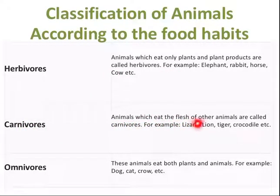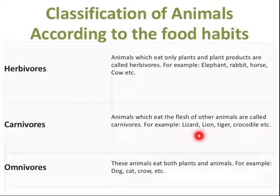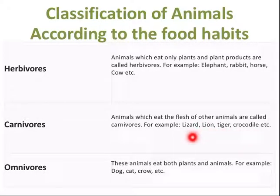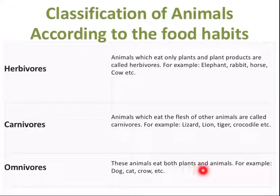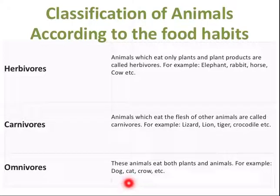Carnivores are animals which eat the flesh of other animals — for example lizard, lion, tiger, and crocodile. They depend basically upon other animals. Omnivores are animals that eat both plants and animals — for example dog, cat, and crow.